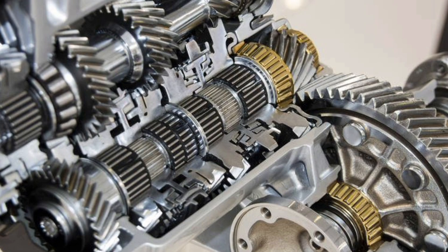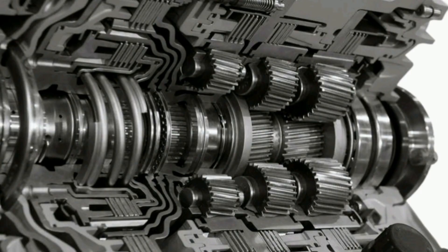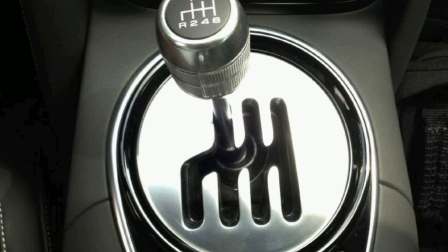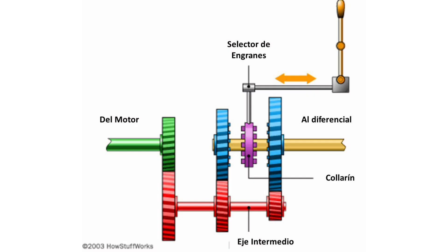1. Manual transmission. The manual transmission, also known as the standard transmission or manual gearbox, is one of the oldest and most common types of transmissions in automobiles. In this system, the driver manually changes gears using a gear lever. It uses a set of gears and synchronizers to transfer power from the engine to the wheels. The driver must depress the clutch pedal to disconnect the engine from the transmission and shift the desired gear, requiring skill and coordination to select the proper gear ratio based on driving conditions.